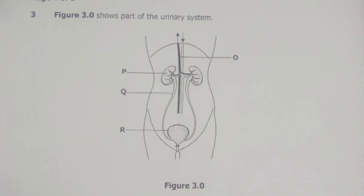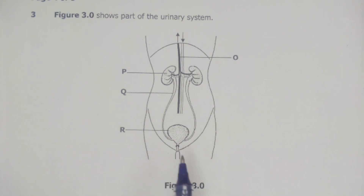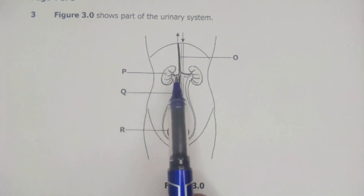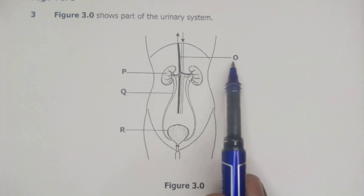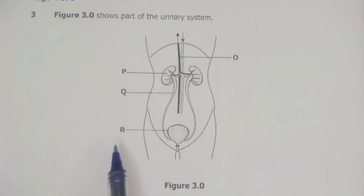This is question number 3, and question number 3 has figure 3.0. Figure 3.0 shows part of the urinary system. We have the urinary system and we have labeled parts O, P, Q, and R. So let's now look at the questions which were asked.